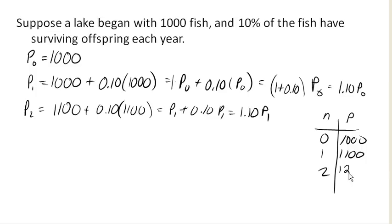Now notice, in this year, the fish population increased by 100. In the next year, it increased by 110, by more than it did the year before. So this is not linear growth.